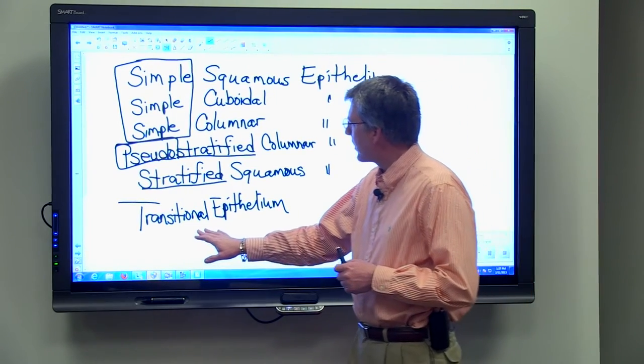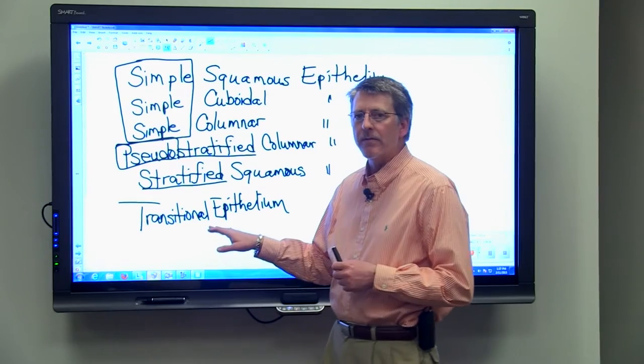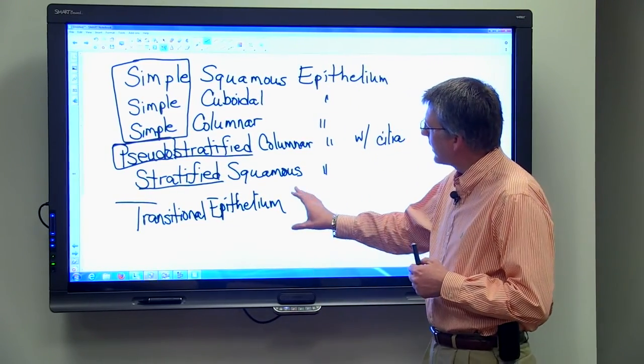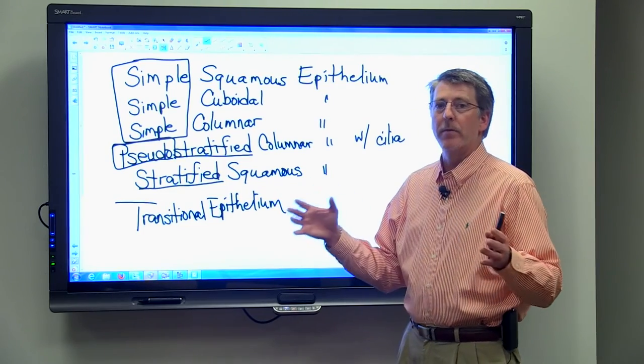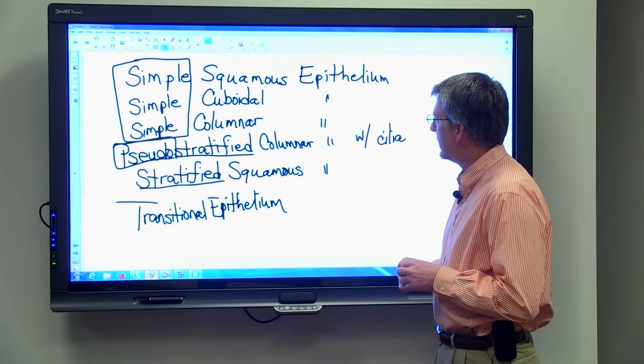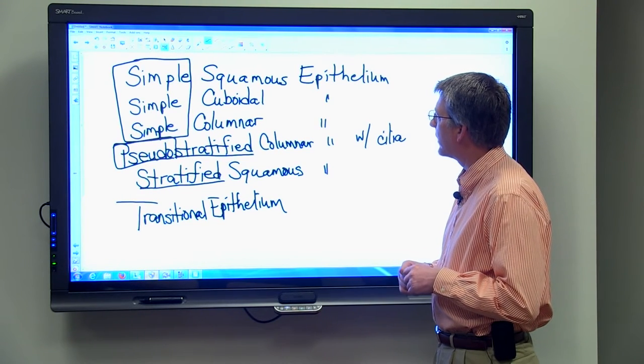And then the last one is transitional epithelium, and it's found in the urinary bladder and the urethra, and it's a little different depending upon whether the bladder is full or the bladder is empty. So we'll look at that in just a few minutes also.